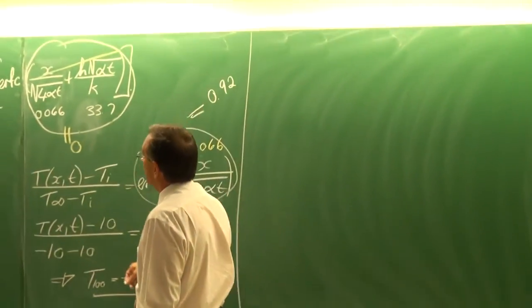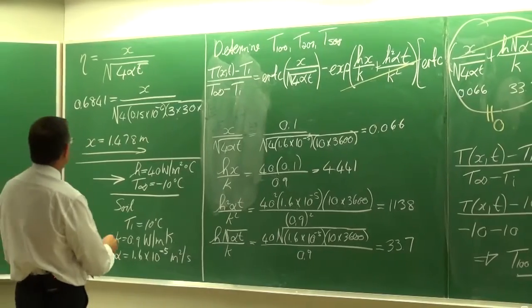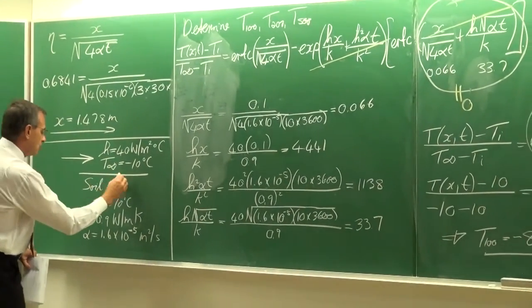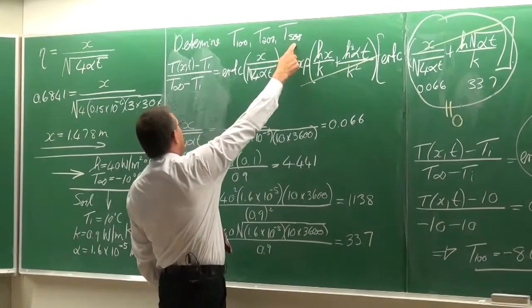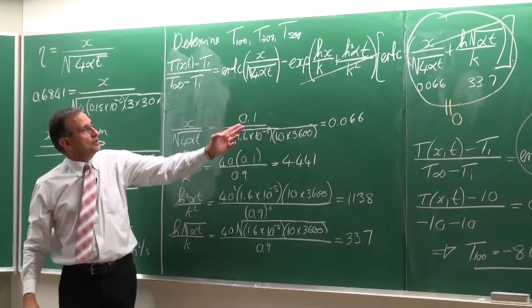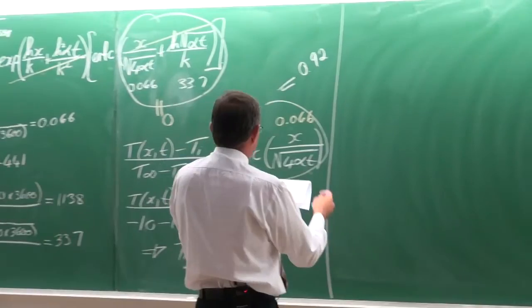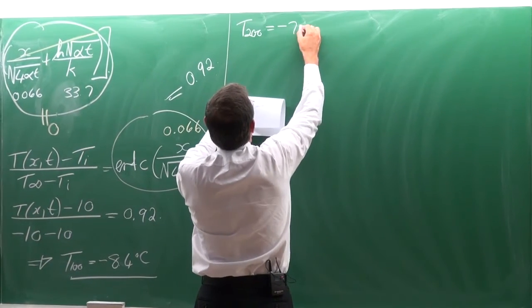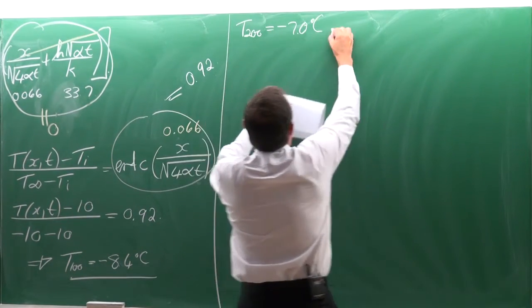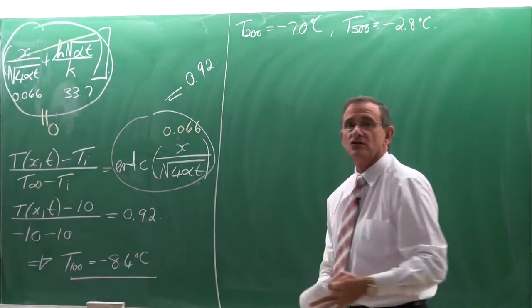So we can solve for the temperature: T minus 10 divided by minus 10 minus 10 equals 0.92, giving a temperature of minus 8.4 degrees Celsius at 100 millimeters depth. For 200 millimeters and 500 millimeters, we simply change x to 0.2 and 0.5 and work through the solutions. The results are: temperature at 200 mm equals minus 7 degrees Celsius, and at 500 mm equals minus 2.80 degrees Celsius.